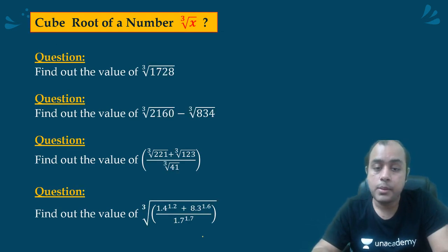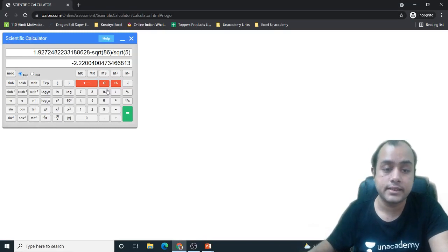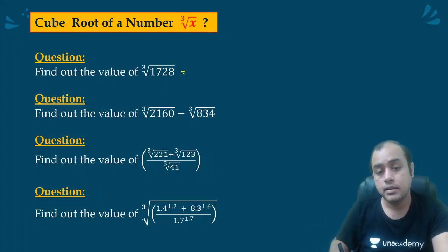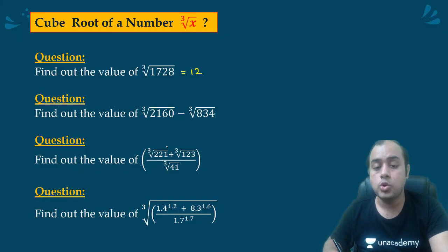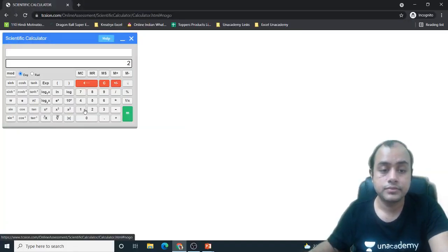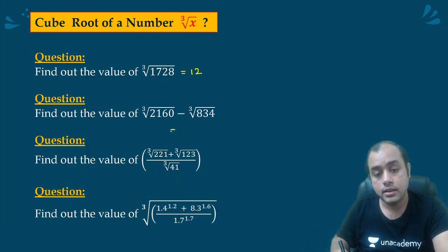Cube root. Cube root of 1728. Follow the same process. Take the cube root: 1728, take the cube root, it is 12. 2160 minus 834. 2160 cube root minus 834 cube root, 9.41286.